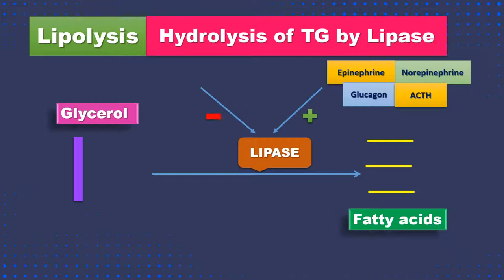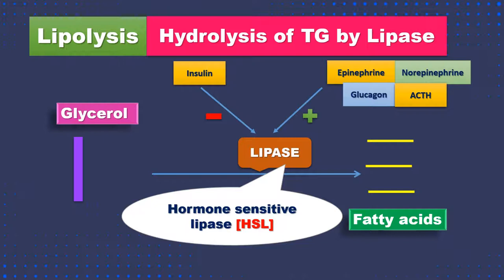This lipase can also be inhibited by the hormone insulin. Whenever there is sufficient insulin in our body, there will not be lipolysis or breakdown of fatty acids. That is the reason diabetic patients undergo more lipolysis and are more prone to diabetic ketoacidosis. Because this lipase activity can be enhanced or inhibited by hormones, we call it HSL or hormone-sensitive lipase.